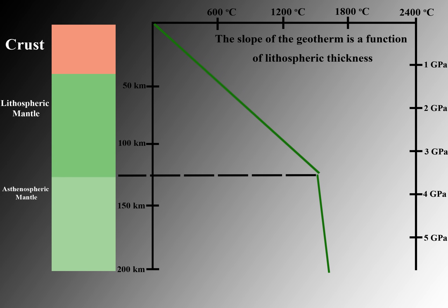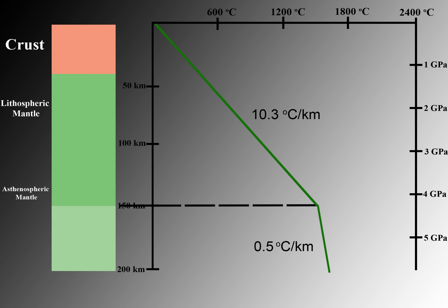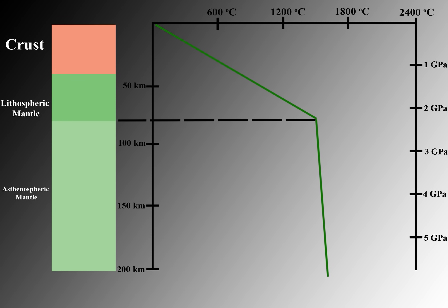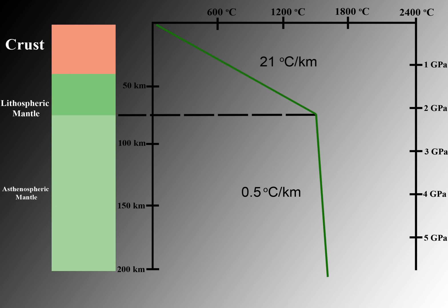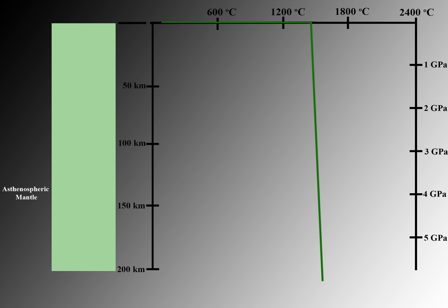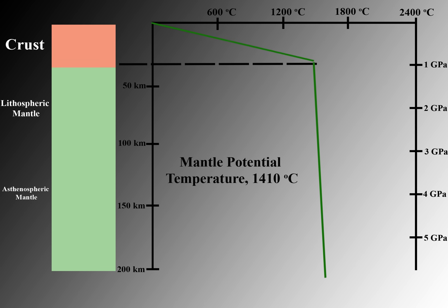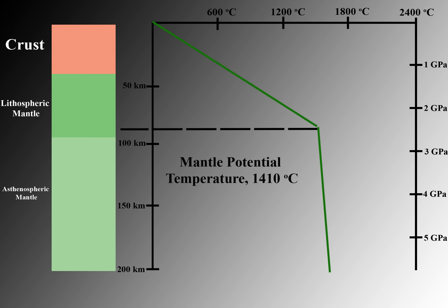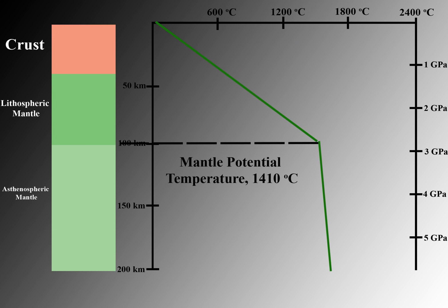The slope of the geotherm is a function of lithospheric thickness. Notice how the conductive geotherm's slope changes with lithospheric thickness, while the slope of the adiabatic geotherm doesn't change. If the adiabatic geotherm extended to the surface, the temperature would be 1,410 degrees Celsius — this is called the mantle's potential temperature. This is not the case because the conducting lithosphere acts as a heat insulator, causing a wide temperature variation between the asthenosphere and the surface.